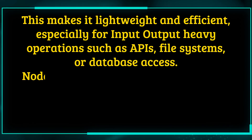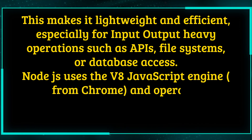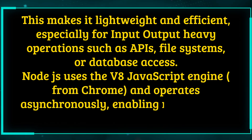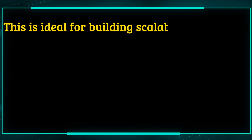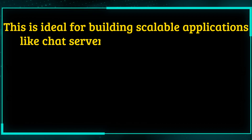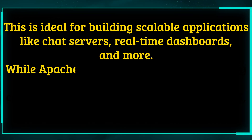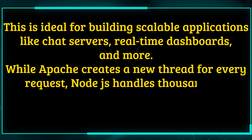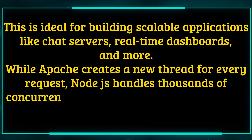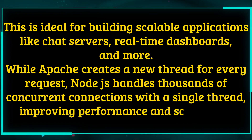Node.js uses the V8 JavaScript engine from Chrome and operates asynchronously, enabling non-blocking code execution. This is ideal for building scalable applications like chat servers, real-time dashboards, and more. While Apache creates a new thread for every request, Node.js handles thousands of concurrent connections with a single thread, improving performance and scalability.